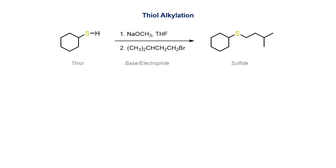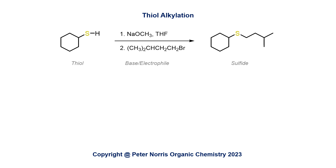Overall, treating a thiol with a strong base followed by adding an alkyl halide electrophile is a convenient method for producing sulfides. The mechanism involves deprotonation of the thiol followed by an SN2 displacement on the alkyl halide.